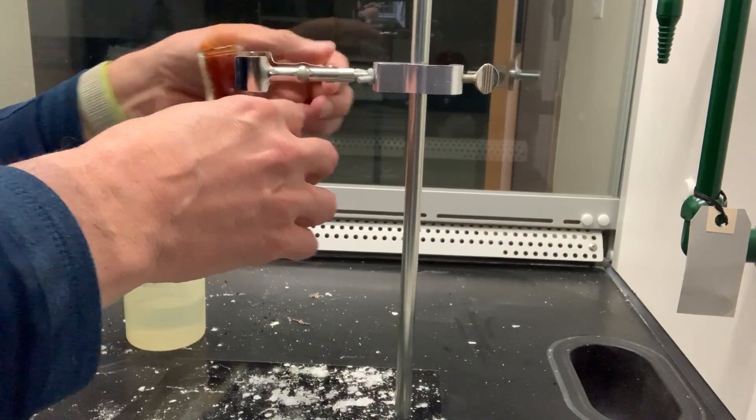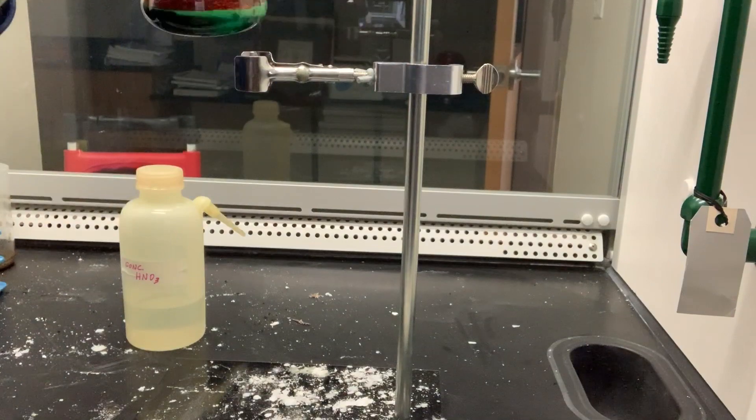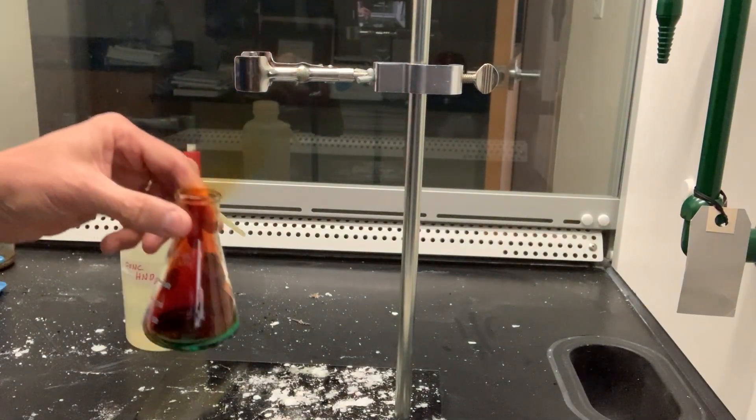The bluish-green solution produced at the bottom of this flask is copper(II) nitrate. Let me show that to you. You can see that.